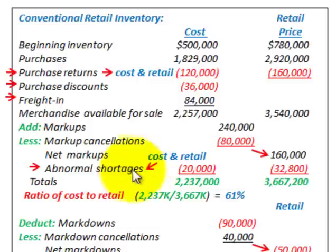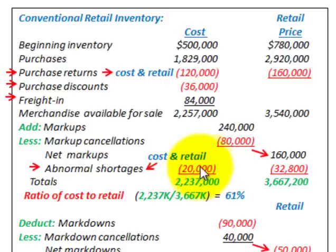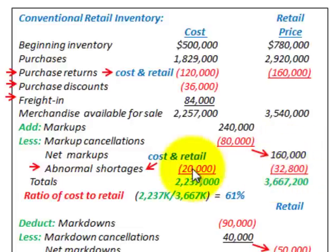Next we have abnormal shortages, which are inventory shortages beyond the normally planned or expected levels. Abnormal shortages affect both columns: we subtract them at cost from the cost column, and subtract them at retail price from the retail price column.